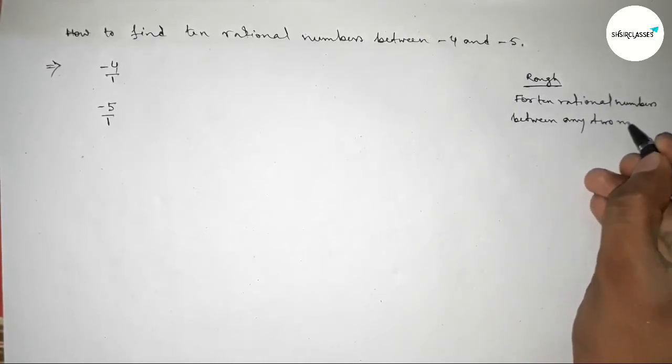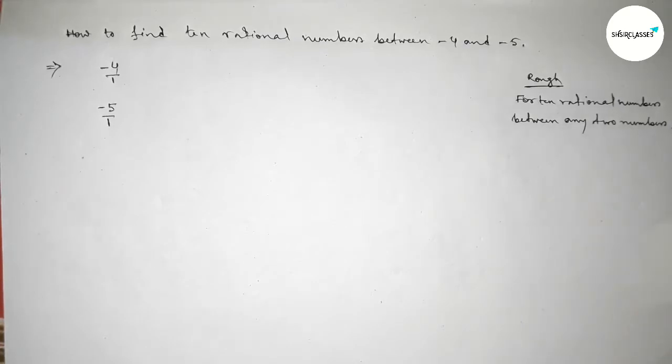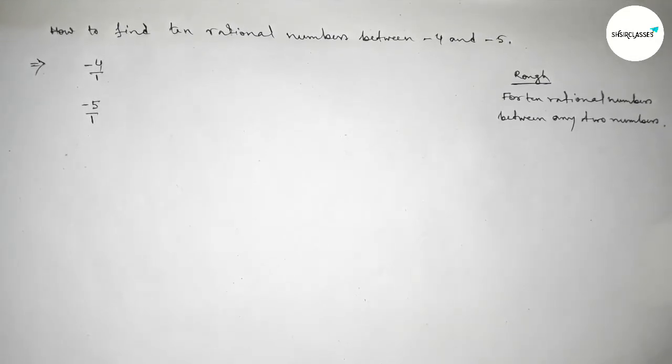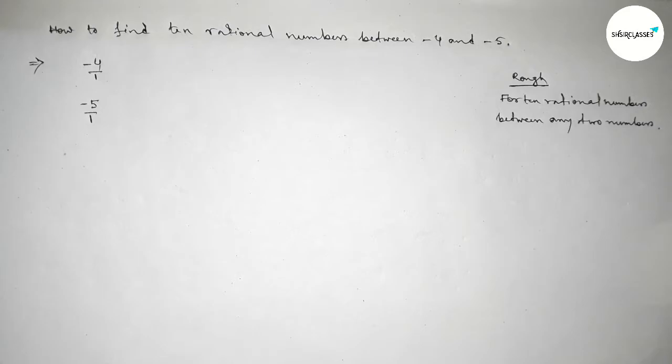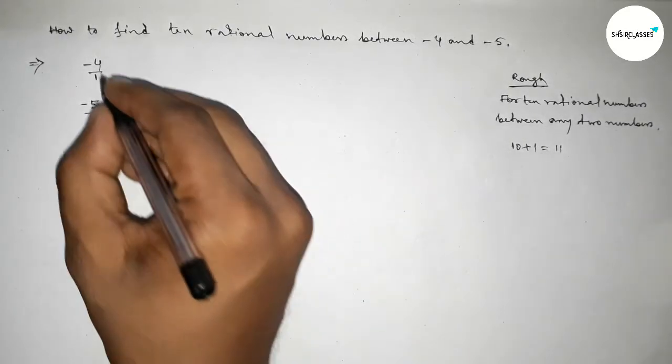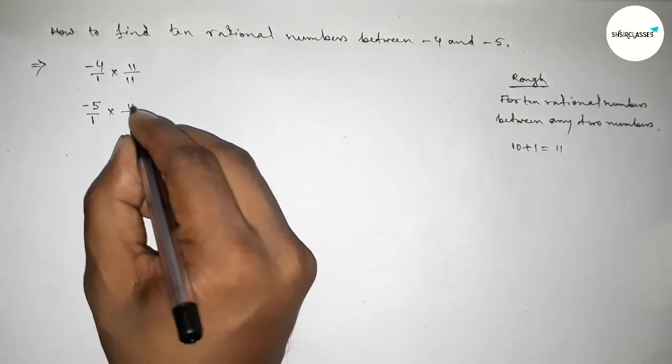For finding 10 rational numbers between any two numbers, we have to follow this method: we should multiply both numbers by 10 plus 1. So we have to multiply both numbers by 10 plus 1. 10 plus 1 equals 11, so we're multiplying by 11.